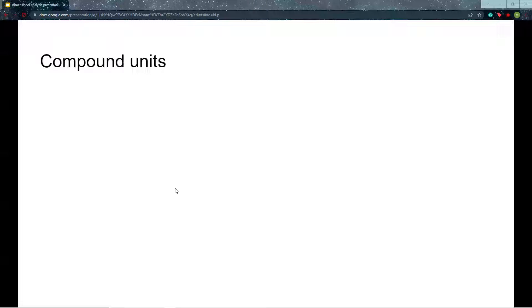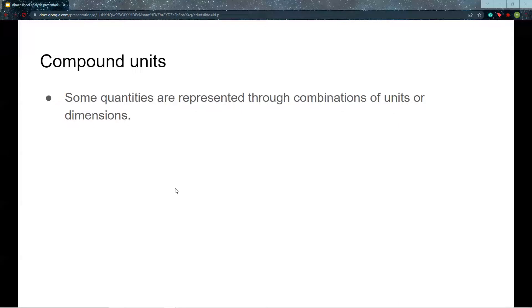Next we should discuss compound units. These are units that are represented by a combination of dimensions. Many of these are spoken using blank per blank. An excellent example of this is speed units like miles per hour or kilometers per hour.